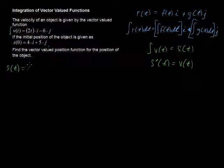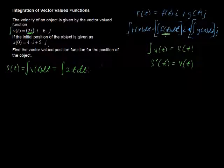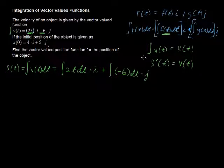s of t, that's the position function, equals the integral of v of t, which equals the integral of 2t dt, that's our f of t function, and then this is all being multiplied by i, plus the integral of negative 6, because our function is negative 6 dt, and that's all being multiplied by j. Okay, these are pretty easy integrals to take, so let's do that.